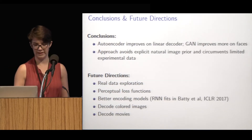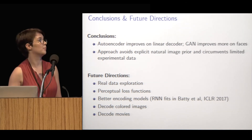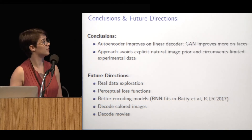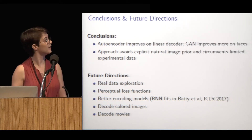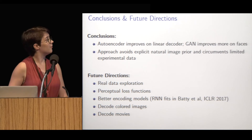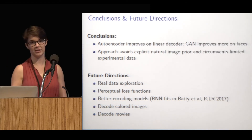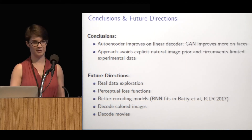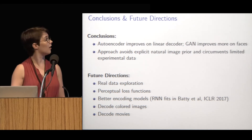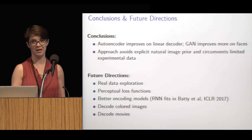Overall, we've shown that the autoencoder improves on the linear decoder and we get more improvements with the GAN. In general, our approach avoids an explicit natural image prior, which has posed a real problem for similar efforts before, and it circumvents the need for a ton of training data by using this encoding model to simulate data. The main track we're looking at right now is showing this works on real data — we recently collected some experimental data showing pulse movies to this retinal prep, and we see some preliminary results that seem promising.